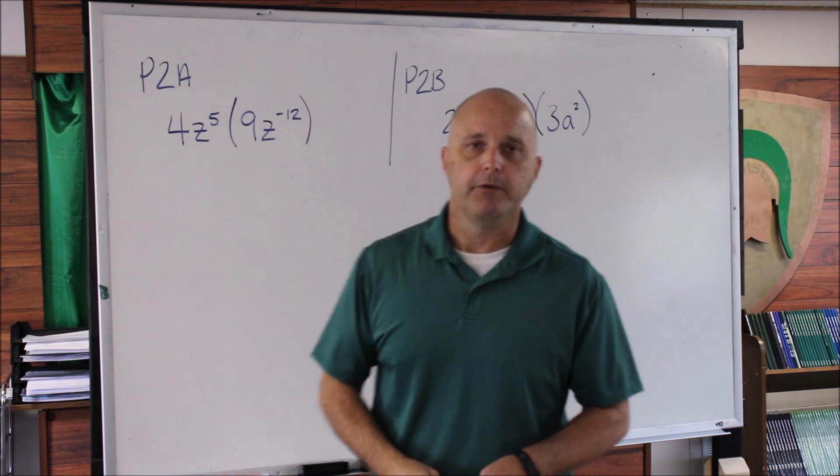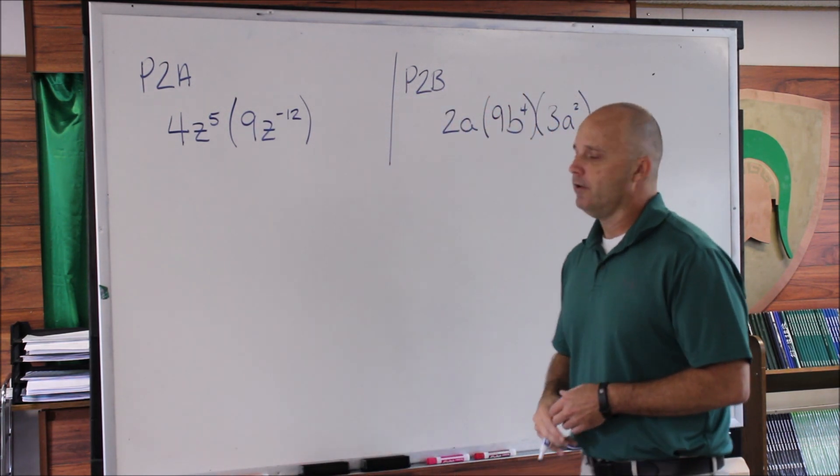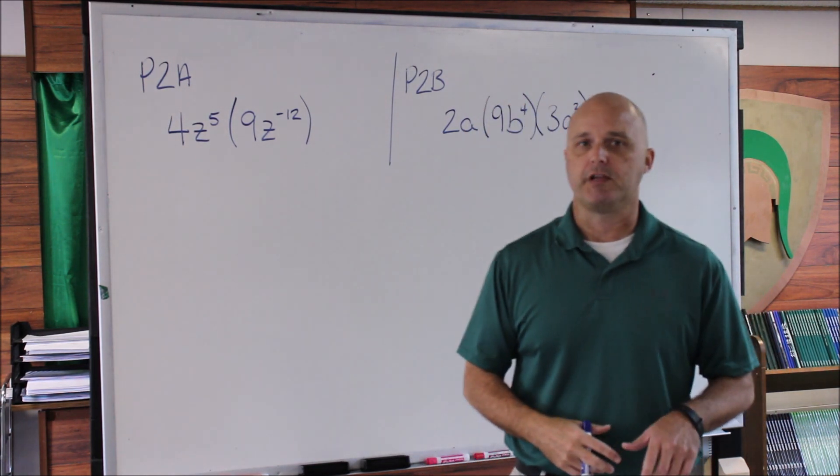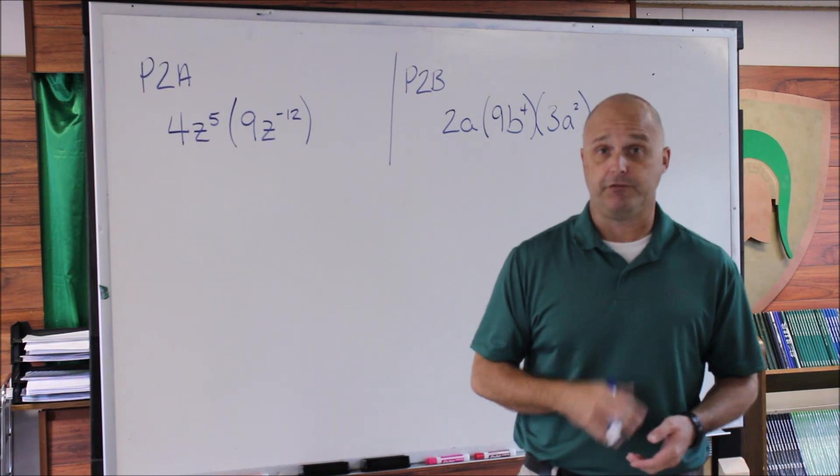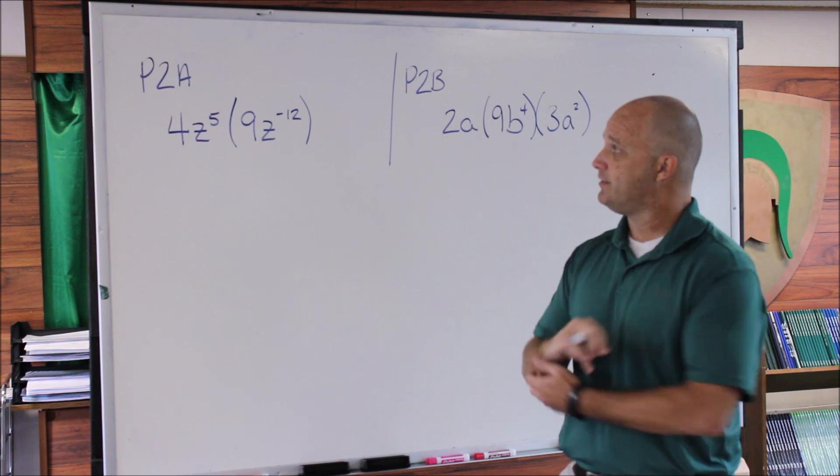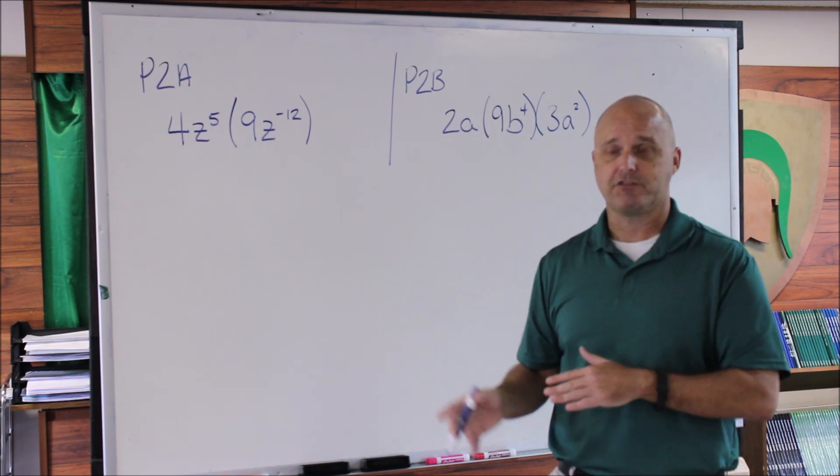In problems 2a and 2b, we're being asked to simplify the expression. I'm going to take you through the entire thought process. You will be able to start skipping steps, but that's not a good idea until you really have this figured out. The first thing I'm going to do with problem 2a is rearrange everything so that everything that's alike is sitting next to each other.